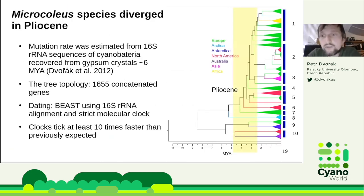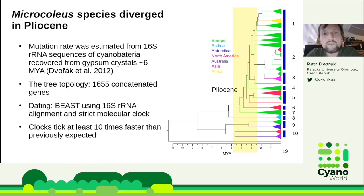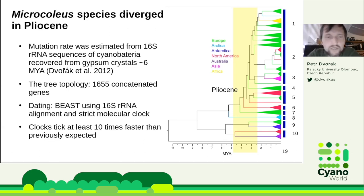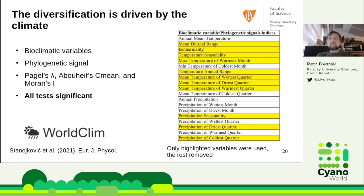We now have more than 200 genomes, but here I show 150. We concatenated more than 1,600 genes to produce this phylogenomic tree, seeing about 10 clusters — though this will be decided in the future with more evidence. We also estimated when these diversification events happened. I estimated the mutation rate in 16S rRNA from gypsum crystals, which allowed me to make a chronogram showing that these Microcoleus lineages diverged between two and a half and five million years ago — quite recent, considering cyanobacterial evolution was supposed to be super slow over billions of years, but similar to timescales seen in eukaryotes including animals and plants.